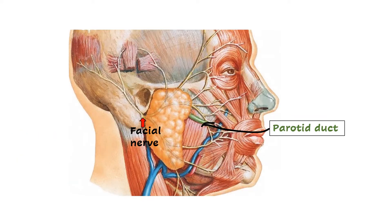Before we consider the structures emerging at the periphery, let us consider the facial nerve and its branches, because a number of branches of the facial nerve will be emerging from the periphery. Here we can see the facial nerve, which enters the parotid gland and within the substance of the parotid gland divides into its terminal branches. Let us look at the names of those terminal branches.